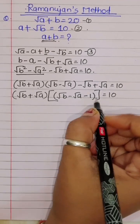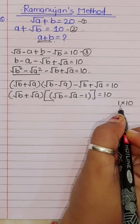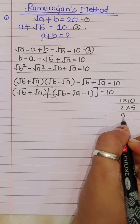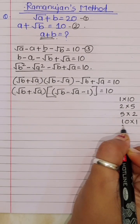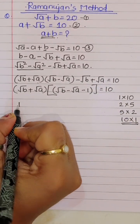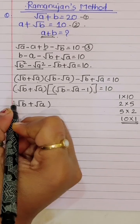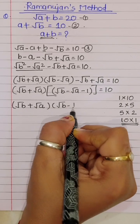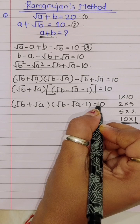Now, what are the factors of 10? The factors of 10 can be: 1 × 10, 2 × 5, 5 × 2, and 10 × 1. So: square root of b plus square root of a, times square root of b minus square root of a minus 1, is equal to 10.